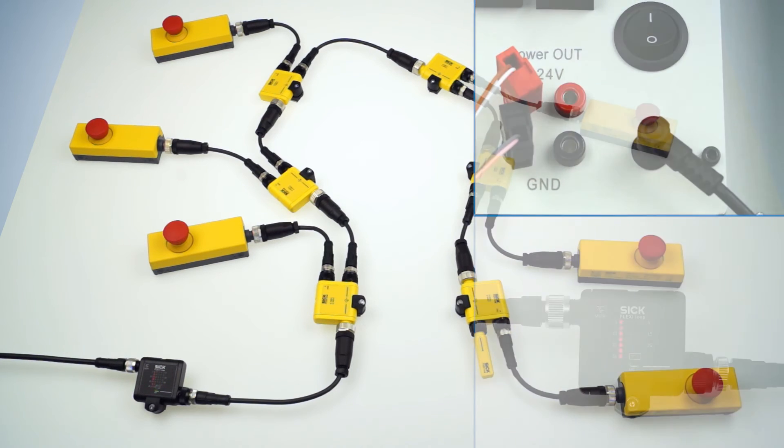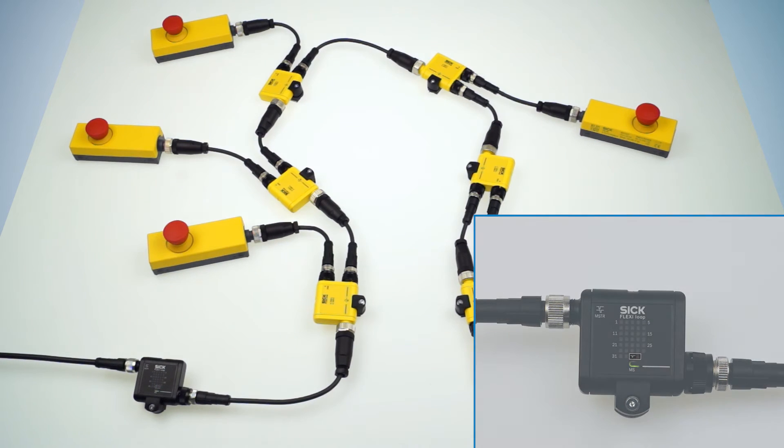Let's have a closer look at the faceplate of the Masternode. The operating mode LED is flashing red, which basically has two meanings. First, we can use the Masternode in the commissioning mode. Or second, we could teach in the FlexiLoop configuration and afterwards change into the safe mode.